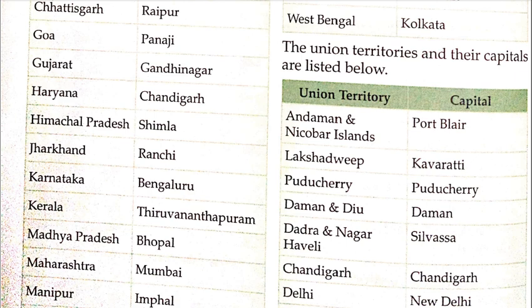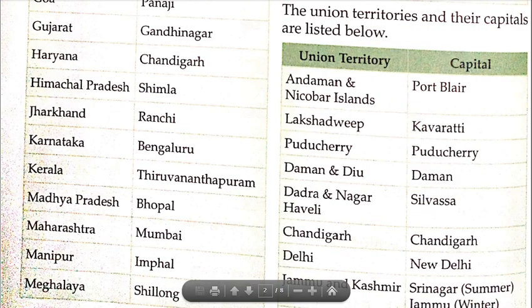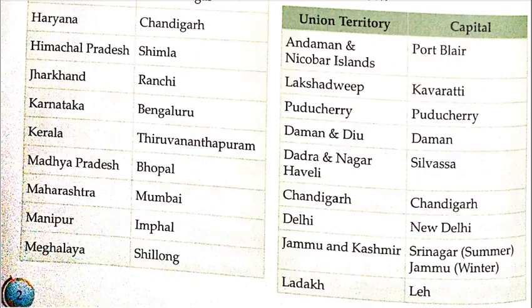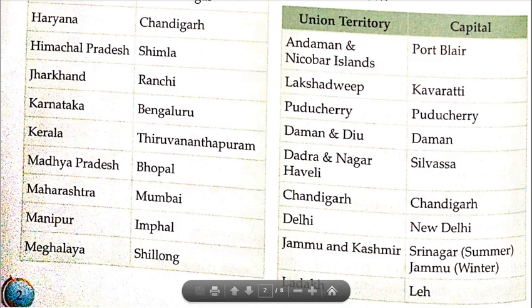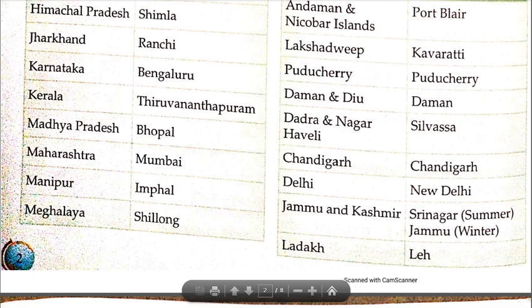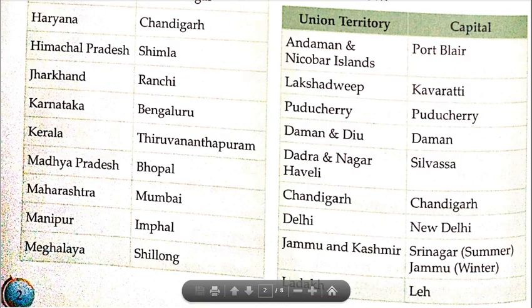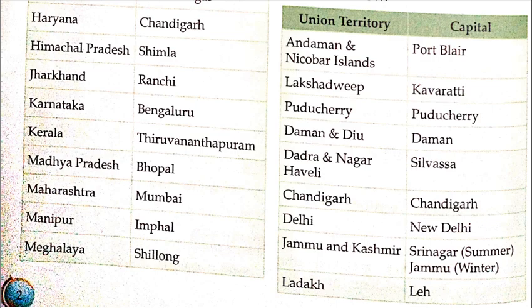Andaman and Nicobar Islands' capital is Port Blair. Lakshadweep's capital is Kavaratti. Puducherry's capital is Puducherry itself. Daman and Diu's capital is Daman. Dadra and Nagar Haveli's capital is Silvassa. Chandigarh's capital is Chandigarh. Delhi's capital is New Delhi. Jammu and Kashmir's capital is Srinagar in summer and Jammu in winter. Ladakh's capital is Leh. You will note all these union territories in your copy and memorize them well.